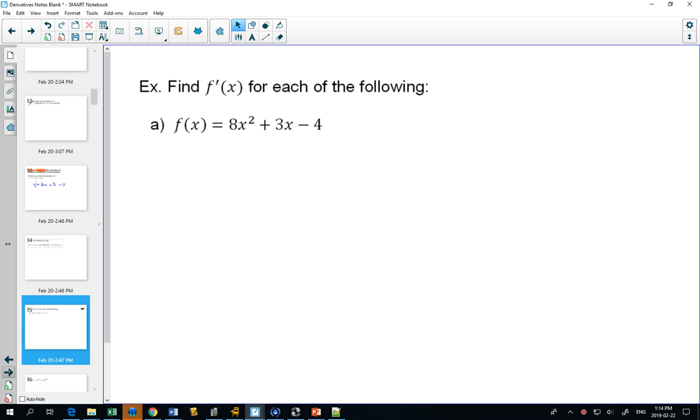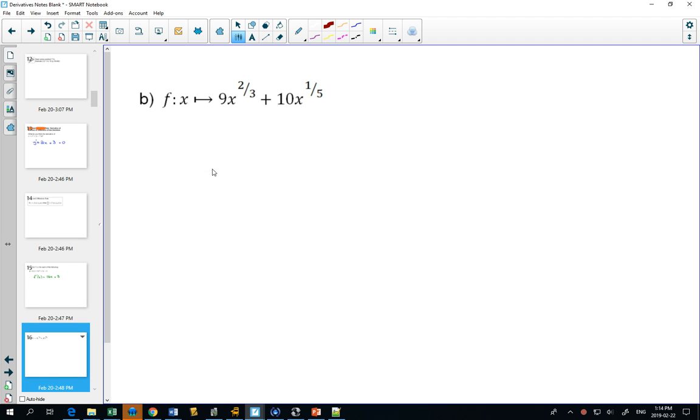A lot of these are fairly straightforward. This one is already in a form where each of the terms you know how to take the derivative of. We can find the derivative: bring the 2 out in front, subtract 1 from the exponent, derivative of 3x is 3, and the derivative of negative 4 is just 0.